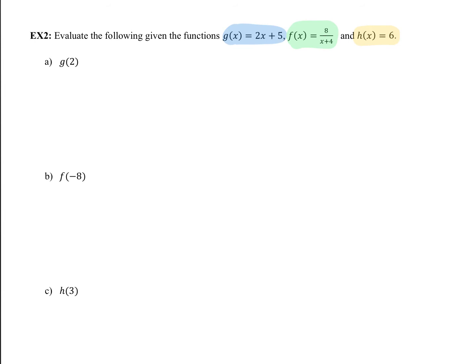Now, what are they telling us? Well, g of x says, if you input some x value, what I'll do with the x value is I'll multiply it by 2 and then I'll add 5 to it. f of x says, if you input an x value, I'll take that x value, add it to 4, and then divide 8 by that value. h of x says, if you input a number for x, you'll always get 6.